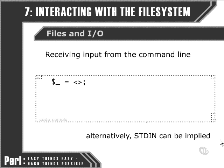Once we've got our line of text, we can do whatever we want with it. You'll notice that we can also, as shown in this example here, omit the file handle for STDIN completely and just use the diamond operator on its own.